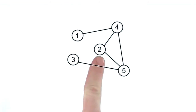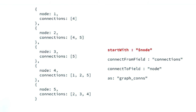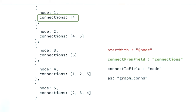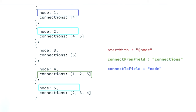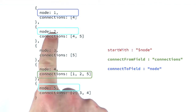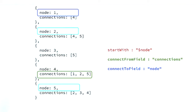Imagine we have a collection with graph nodes to explore. We specify a startWith of node, connectFromField as the connections field, and connectToField as node. Node 4 connects to 1, 2, and 5. We've already traversed from 1 to 4. Node 2 connects to 4 and 5 — we visit node 5. Node 5 connects to 2, 3, and 4 — nodes 2 and 4 have been visited, so we go to node 3. Node 3 only connects to node 5, which has already been traversed, so we end there. Let's insert our nodes and construct the aggregation, using a match stage before graph lookup so we can see the same output as on the slide.